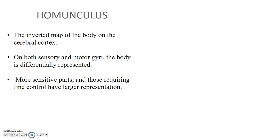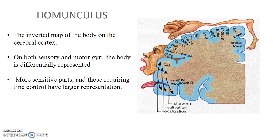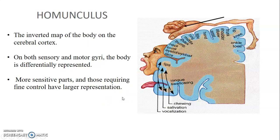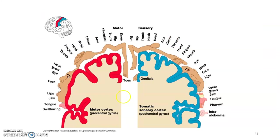The homunculus is an inverted map of the cerebral cortex represented on both the sensory and motor gyri. The most sensitive parts requiring fine control have larger cortical representation — the face and hands have larger areas. The upper limb is represented on the superior aspect, while on the medial surface of the brain, the lower limb is represented in what we call the paracentral lobe — the parts of the pre- and post-central gyrus on the medial surface of the hemisphere.